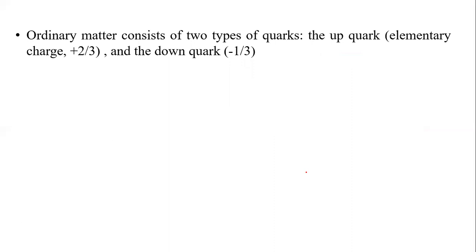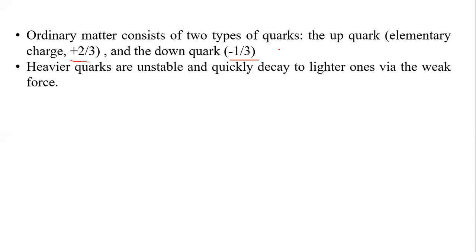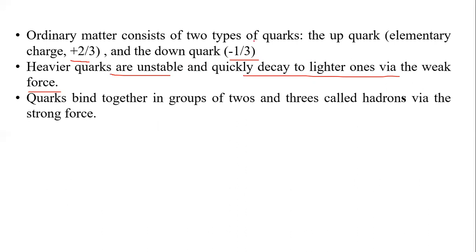Ordinary matter consists of two types of quarks: up quark (charge +2/3) and down quark (charge −1/3). Heavier quarks are unstable and quickly decay to lighter ones via the weak force. Quarks bind together in groups of 2s and 3s called Hadrons via the strong force.